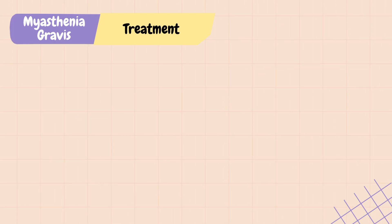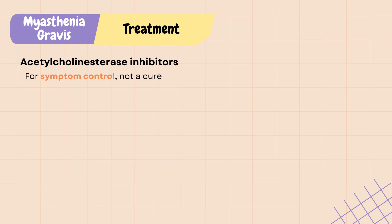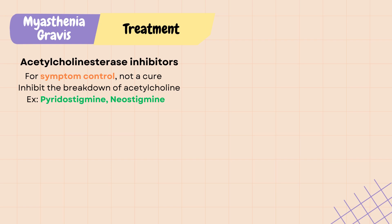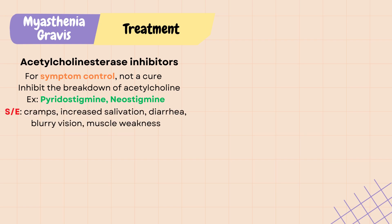Acetylcholinesterase inhibitors are commonly used to improve symptoms of MG, but they do not treat MG itself. Acetylcholinesterase is an enzyme that breaks down acetylcholine. These inhibitors prevent that breakdown so more acetylcholine is available to bind to receptors. Examples include pyridostigmine and neostigmine. Side effects include cramps, increased salivation, diarrhea, blurry vision, and muscle weakness.